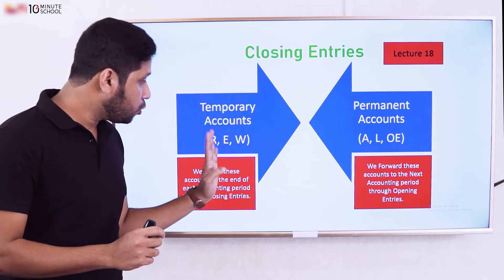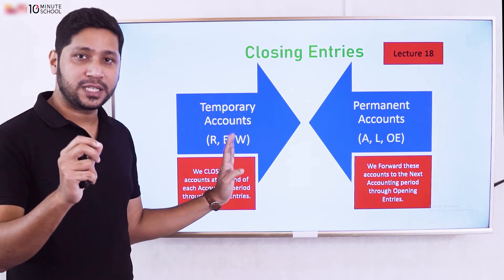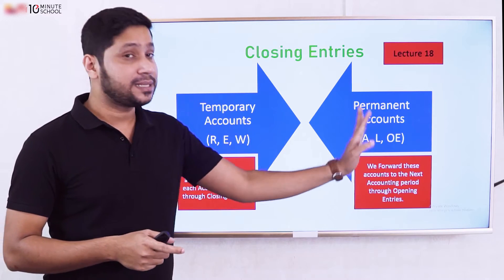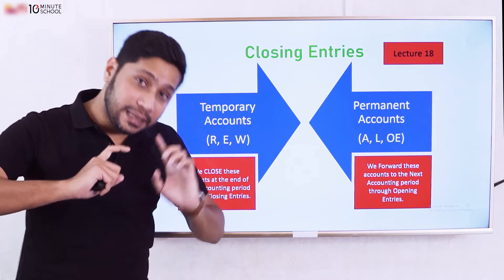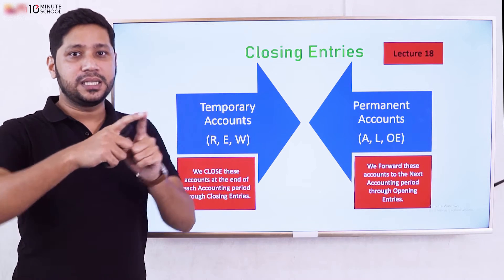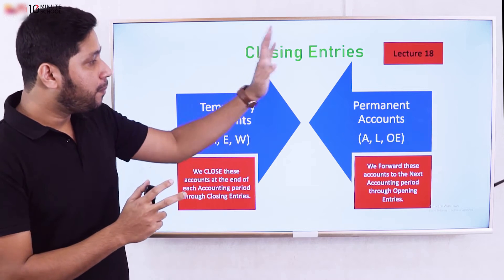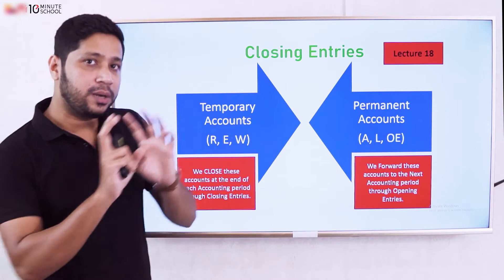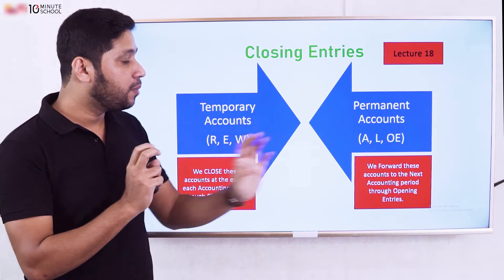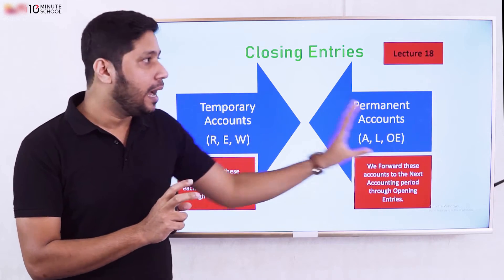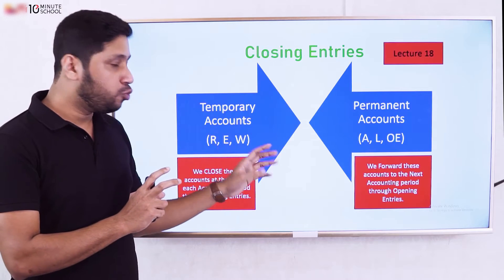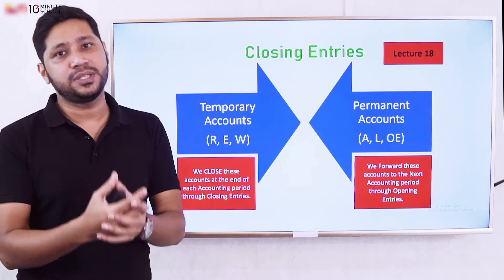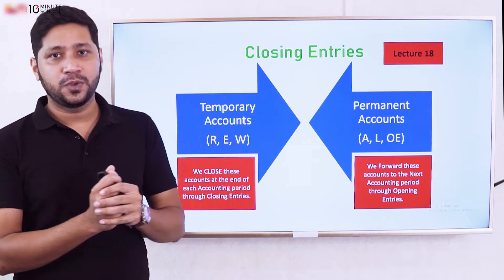Revenue and expense will be closed at the end of the accounting period, so they are temporary accounts. But asset and liabilities are not closed — they carry forward. The permanent accounts are asset, liabilities, and owner's equity. The temporary accounts — revenue and expense — require closing entries.